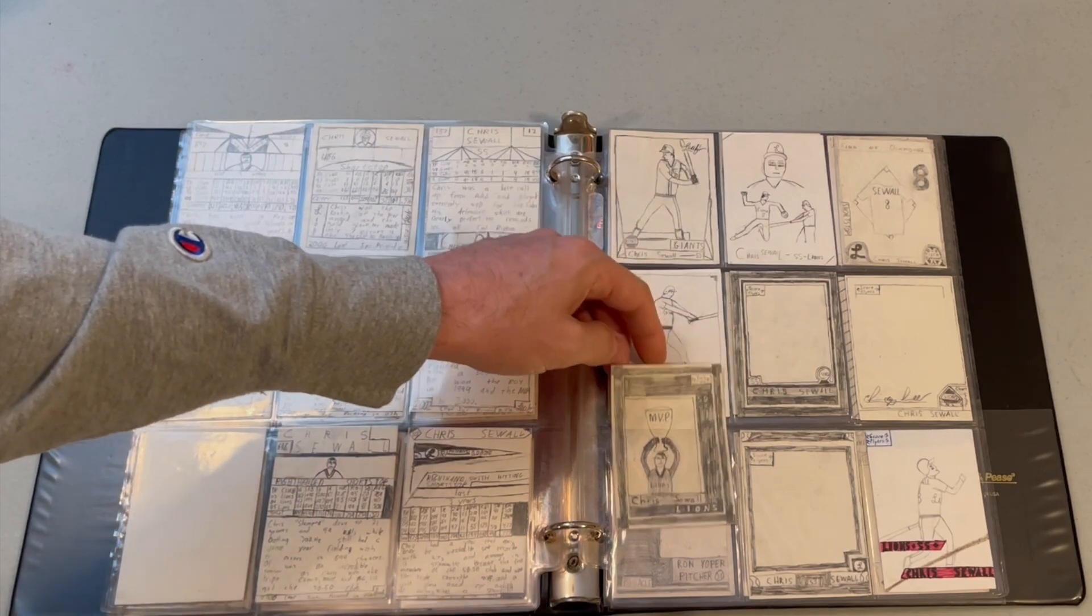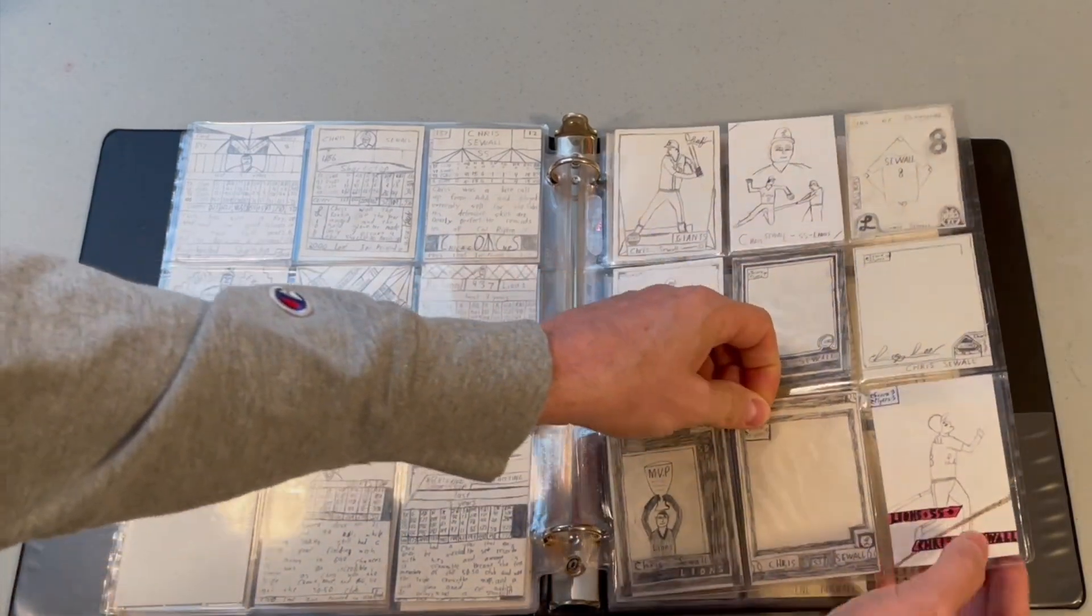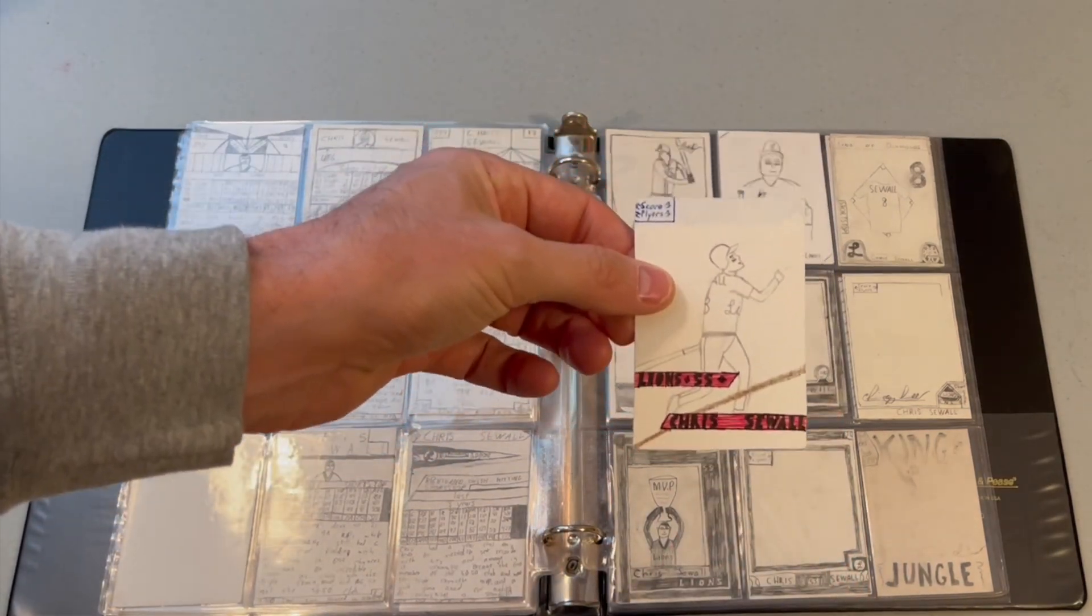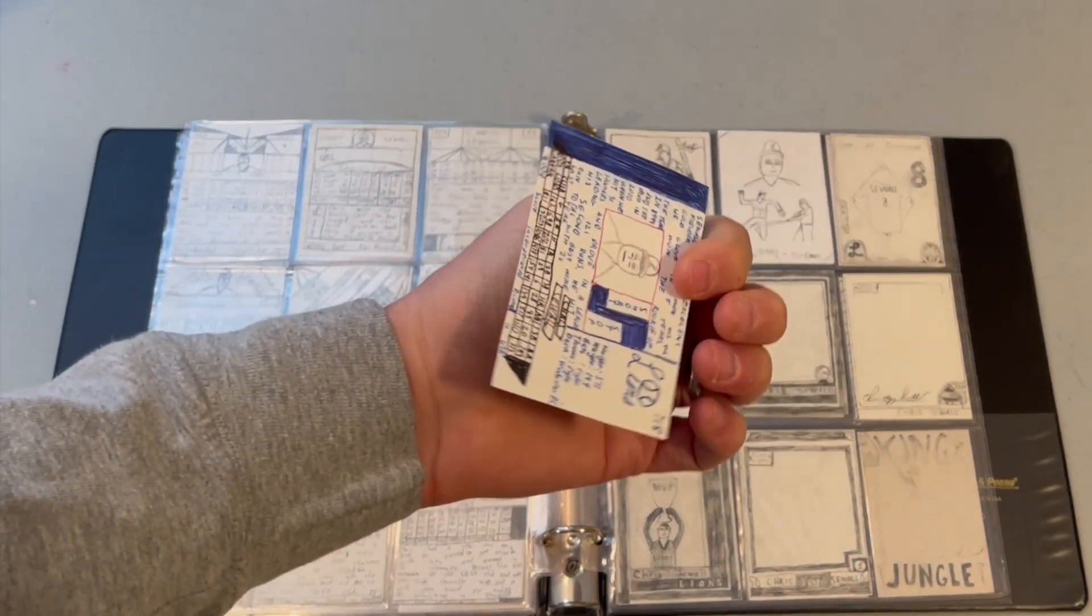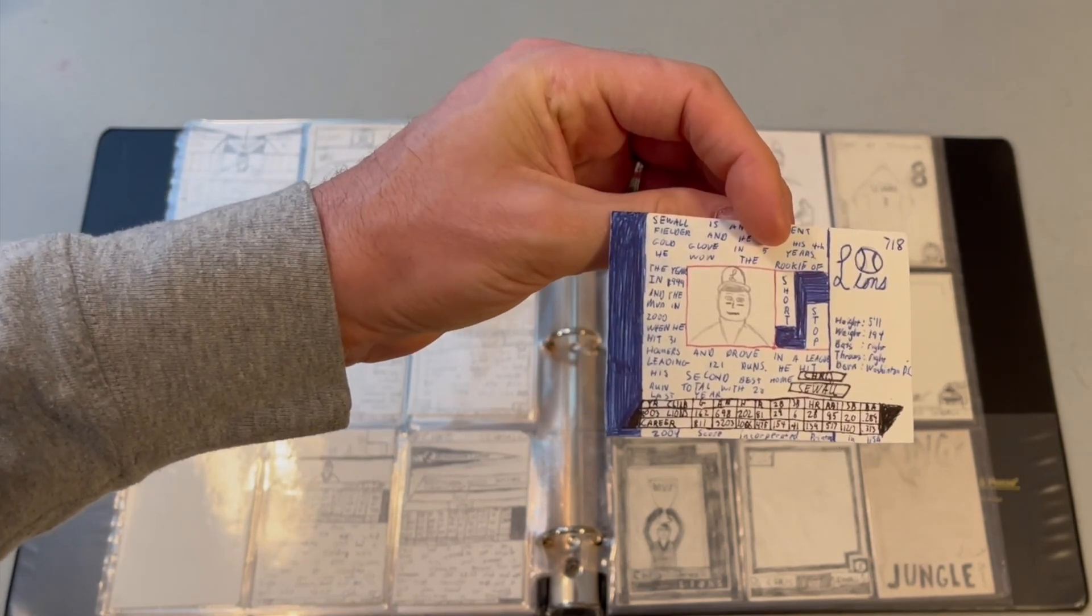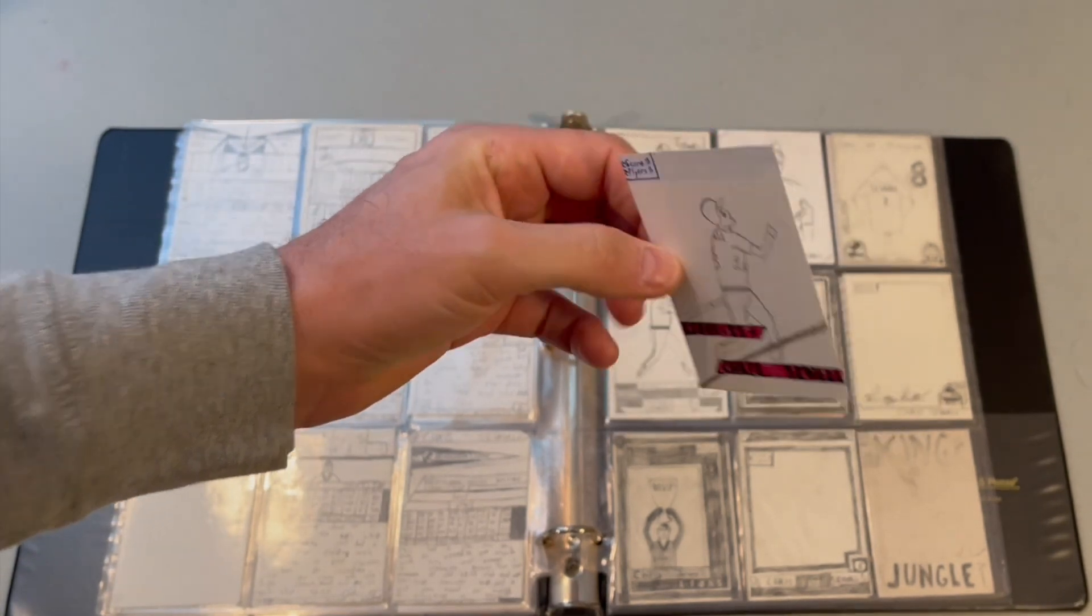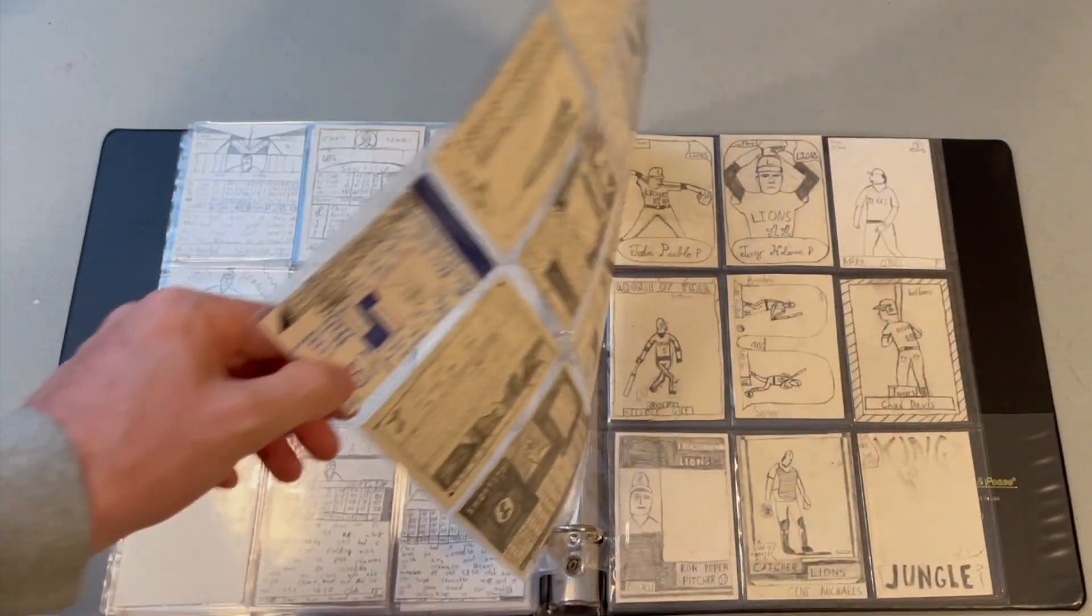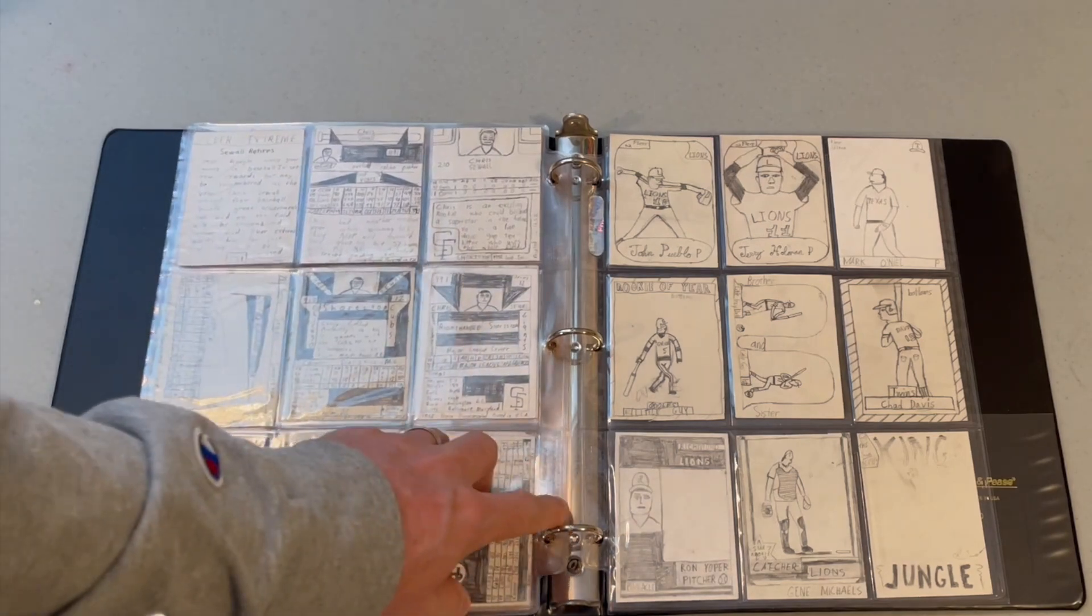This card was clearly inspired by 1991 Pinnacle. If you're familiar with that set, it came out in football and hockey, and that looked a lot like it. And this card here I'm holding was clearly inspired by 92 Ultra, a very similar design on the front. And this was the only card I ever made in color, apparently. I don't know if that was like a future project to start making the cards in color, but of all the cards here, there was only one that I actually did in color.